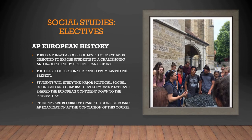AP European History is a full-year, elective, college-level course where you will look at European history and world history from a European lens, from 1450 to the present. You will examine cultural developments that have shaped the European continent all the way up to present-day problems.